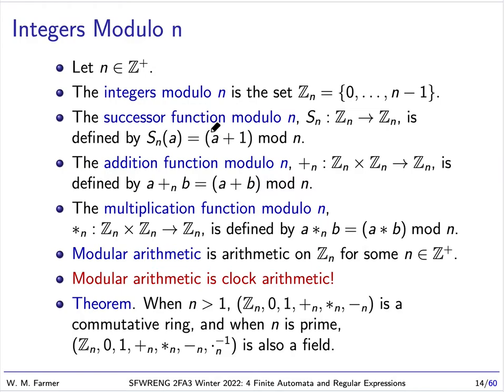We can define various functions on this set. The successor function modulo n, S_n: Z_n → Z_n, is defined by S_n(a) = (a + 1) mod n. The addition function modulo n, +_n: Z_n × Z_n → Z_n, is defined by a +_n b = (a + b) mod n. And multiplication is the same way.